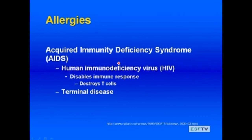Acquired immunodeficiency syndrome, or AIDS, is mediated by the human immunodeficiency virus, HIV. HIV targets and destroys T cells, which we've seen are incredibly important in the humoral response. It is often a terminal disease — not from the virus itself, but from other viral, microbial, or parasitic infections that the body cannot fight because the T cells have been destroyed. Production of an effective vaccine has proven difficult because this virus mutates to produce many different strains during the progress of an actual infection.